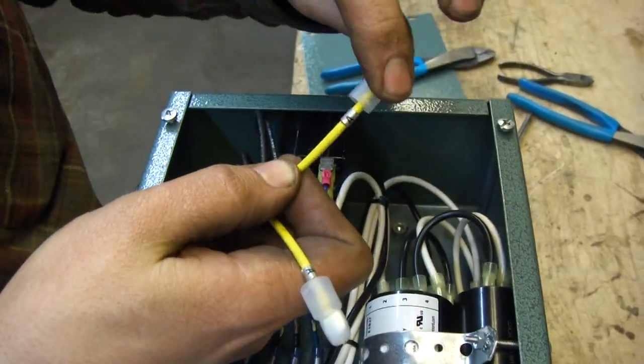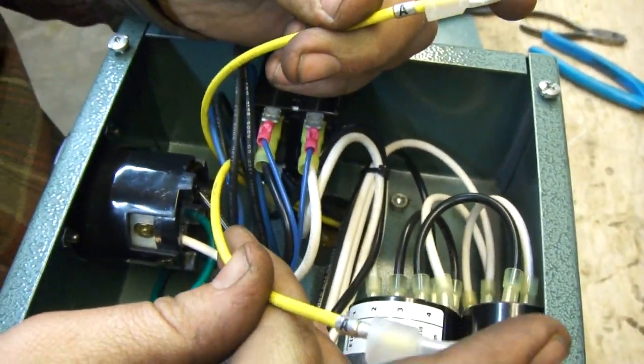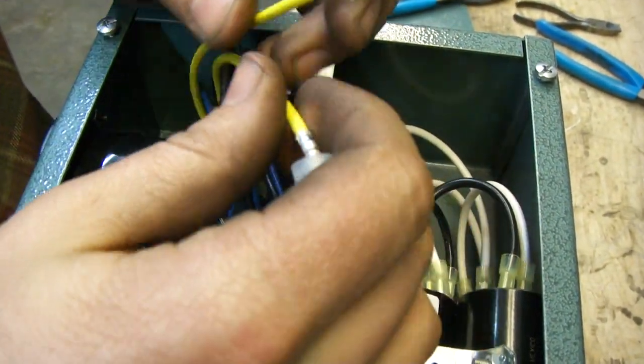Two labels, A and A1. These need to be capped off independently. If they're connected together, the motor won't run.